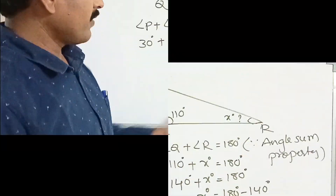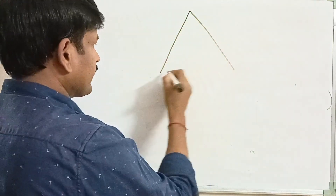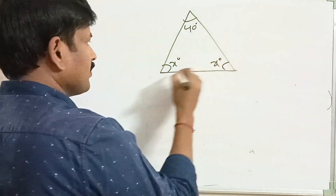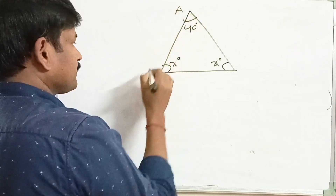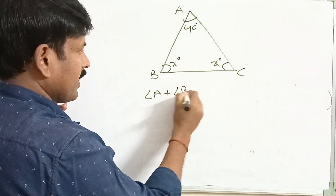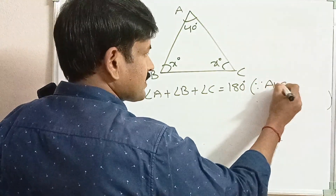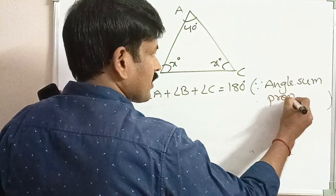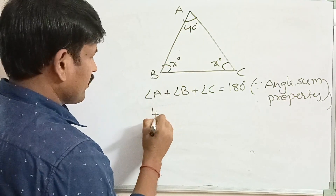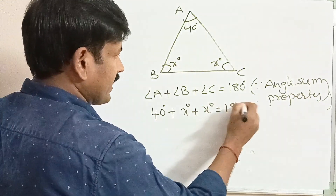Angle R measures 40 degrees. Let us discuss another example. One angle of a triangle is 40 degrees and the other two angles are equal. Find the measure of each equal angle. The triangle is named ABC. We have angle A plus angle B plus angle C equals 180 degrees, by the angle sum property. Angle A measures 40 degrees, angle B is x degrees, and angle C is x degrees.